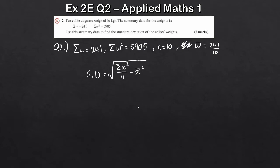So sigma X squared, in this case sigma W squared. So this is the square root of 5,905 divided by 10 minus W bar here. So we just square this. So we're turning 241 over 10 squared. You can write that in its decimal equivalent if you prefer, but you don't have to worry about that too much. And then you place it into your calculator. And what you get here for the standard deviation is 3.11 kilograms there.